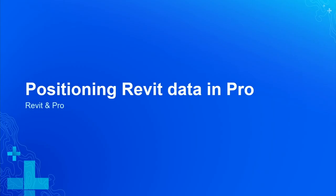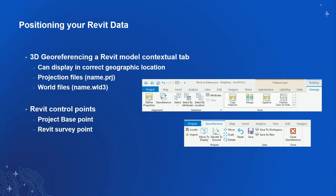Now let's talk about positioning Revit data in Pro. Like we saw, the file ended up in the ocean — it wasn't in the right place. Just like CAD data, we use the georeferencing toolbar with a contextual ribbon to assign a PRJ file and optionally a world file. There's also a survey point and a base point captured from every Revit model, which David will go into about positioning your Revit file.